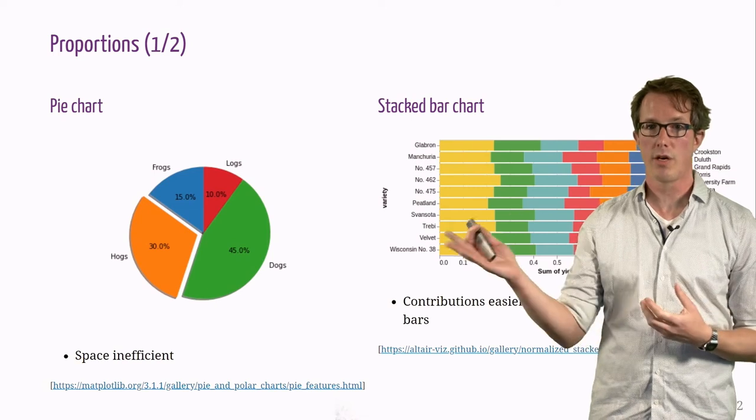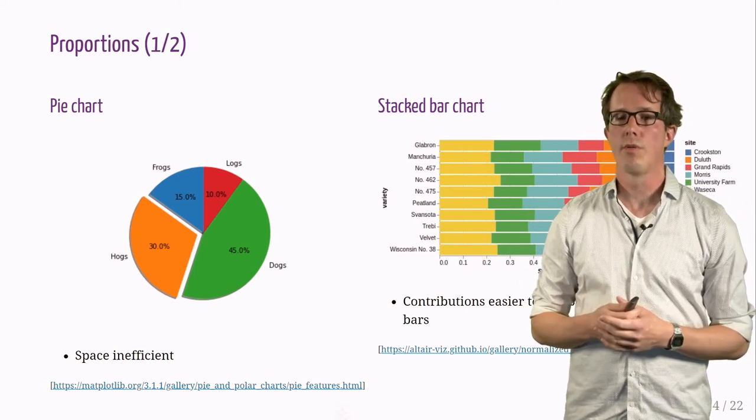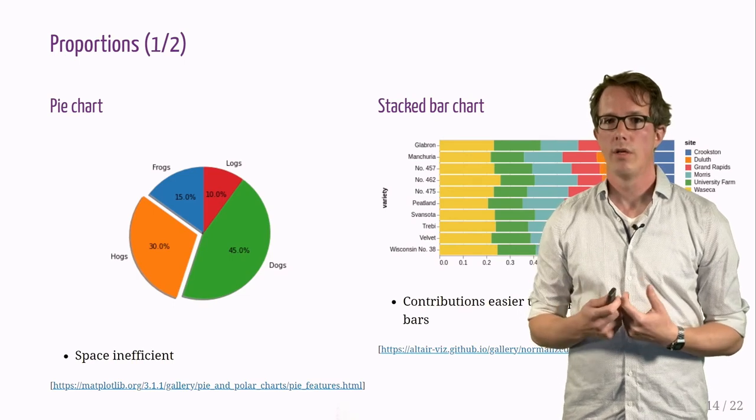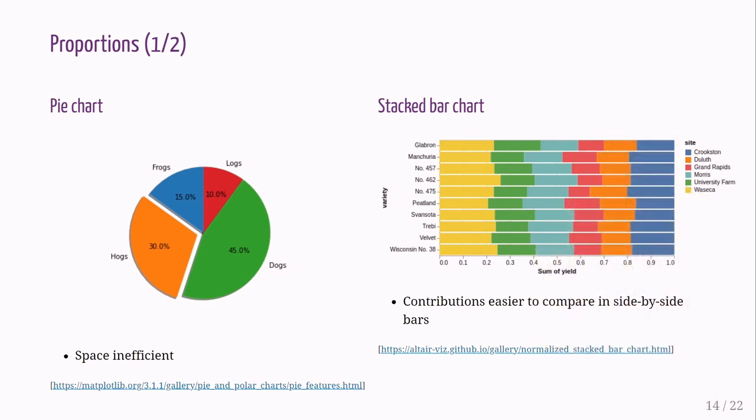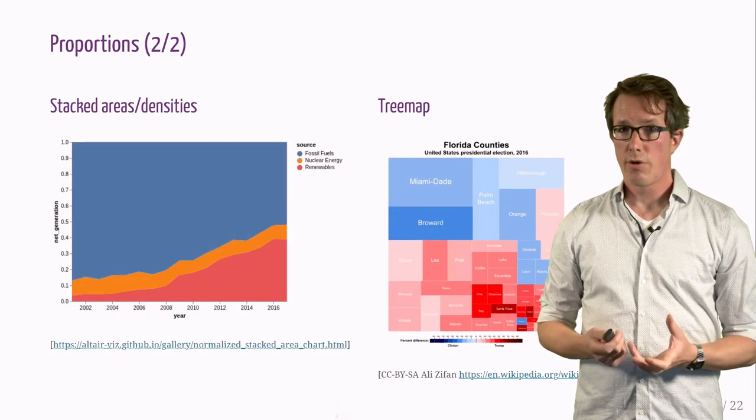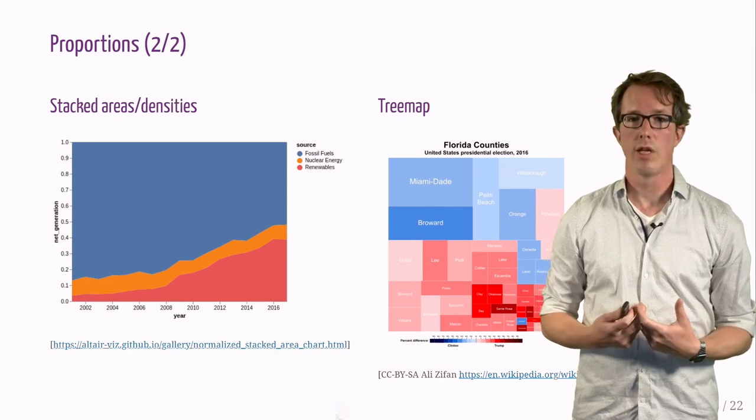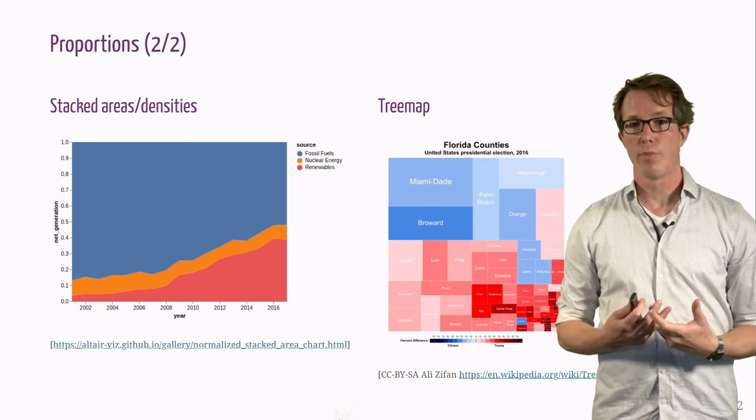Proportions: the classic pie chart on the left, not very space efficient in terms of data-to-ink ratio. On the right side, a stacked bar chart. Proportions can also be represented by stacked areas or densities on the left, or a tree map on the right.